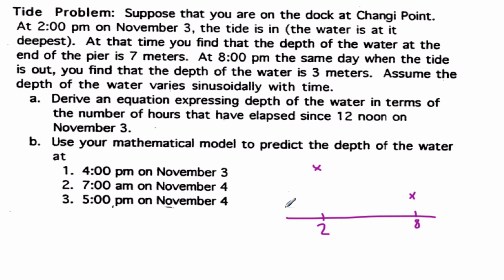Assume the depth of the water varies sinusoidally with time. Derive an equation expressing the depth of the water in terms of the number of hours that have elapsed since 12 noon on November the 3rd. So 12 noon is where we get our zero here. Let's just, can't draw a straight line. There we go. This is 7. This is 3.